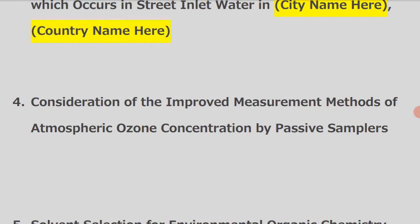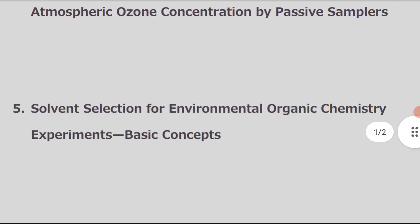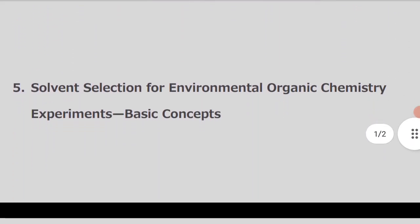Continuing with topic four on atmospheric ozone concentration by passive samplers methods. The fifth one is: solvent selection for environmental organic chemistry experiments — basic concepts.